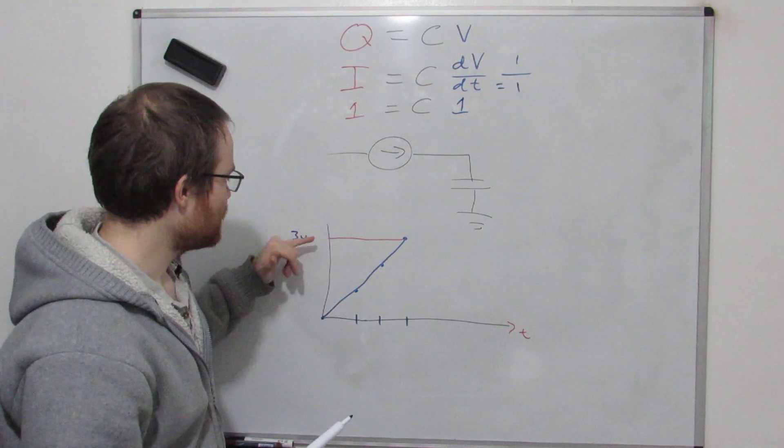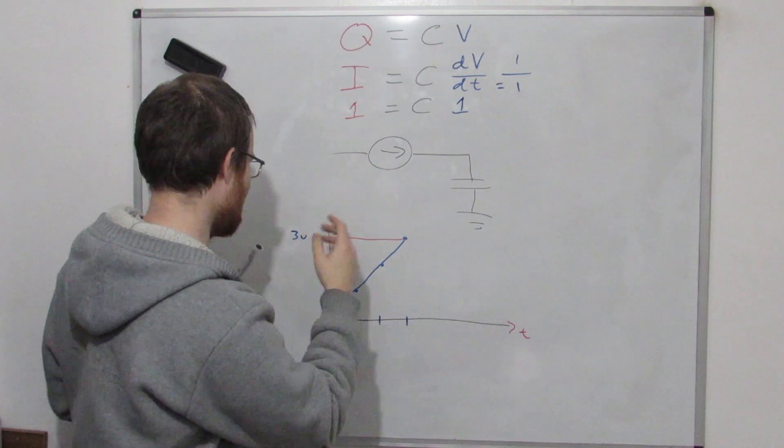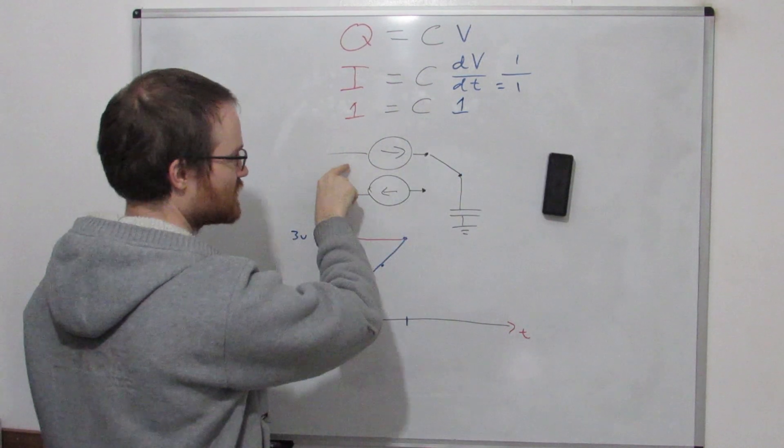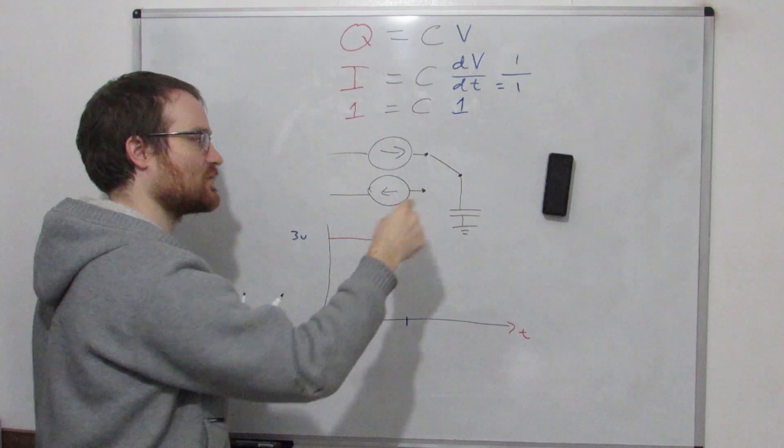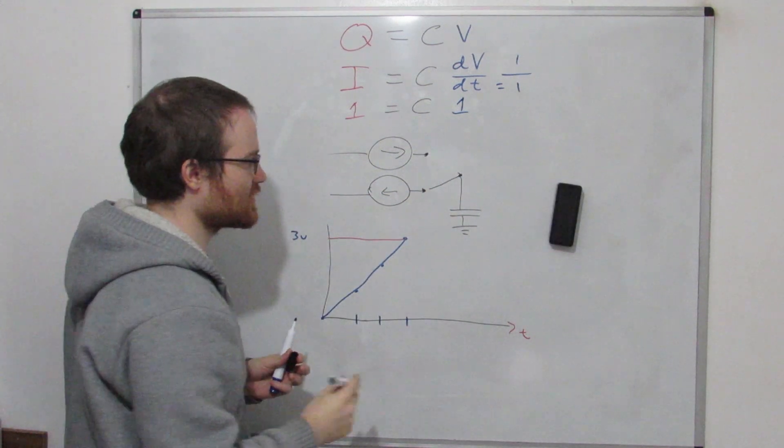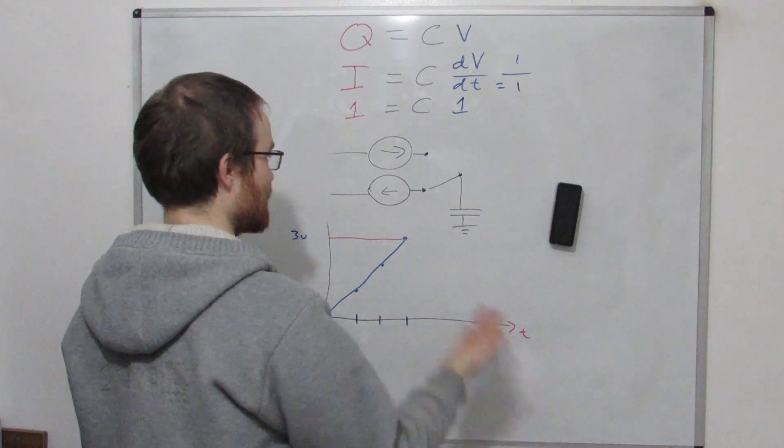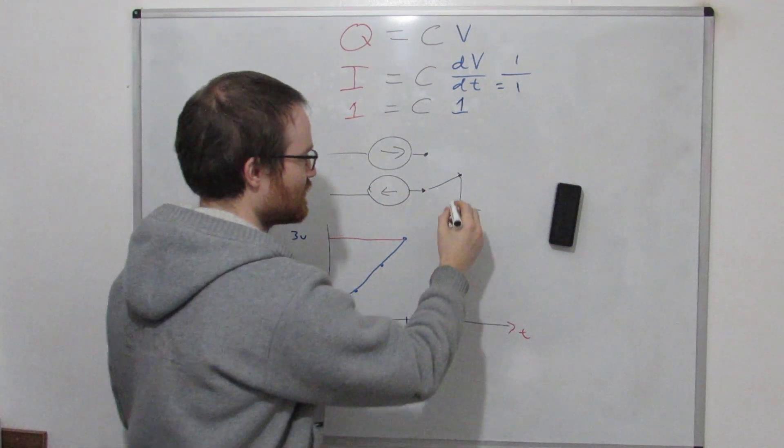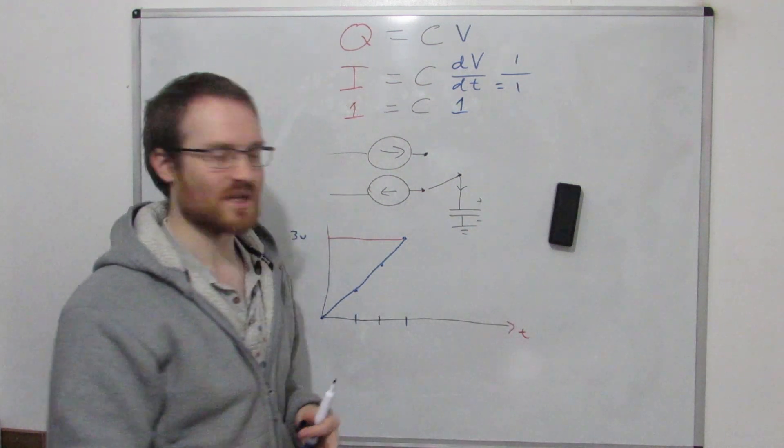Now if we took the constant current source, let's say we had some switch, that we could switch between a constant current going onto the capacitor, and then the same constant current, but coming off the capacitor. If we switch that around, what we can say now about the current, is that from the perspective of the capacitor, there's now minus one amps, let's call it.